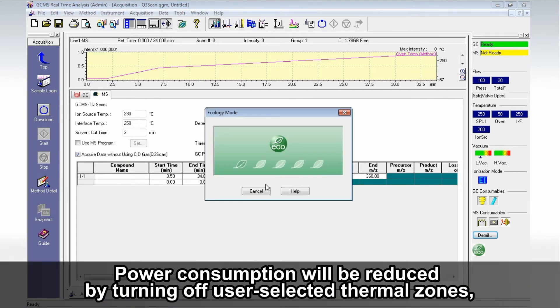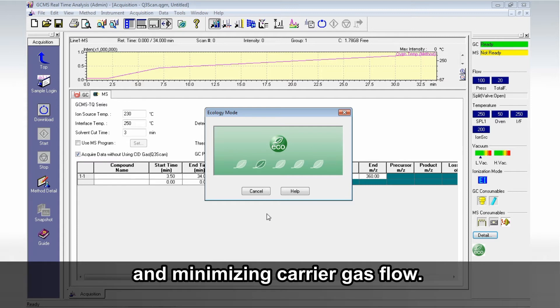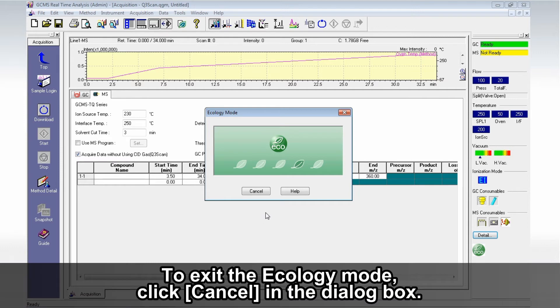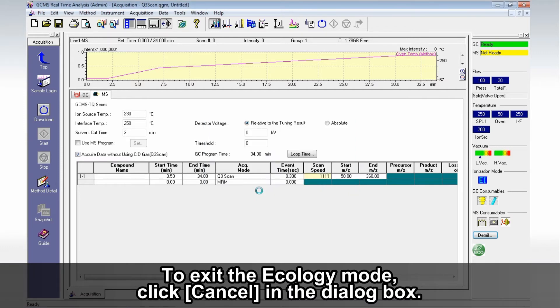Power consumption will be reduced by turning off user-selected thermal zones and minimizing carrier gas flow. To exit the Ecology Mode, click Cancel in the dialog box.